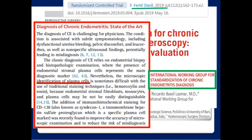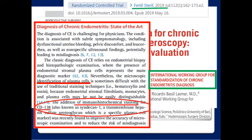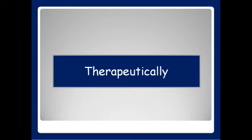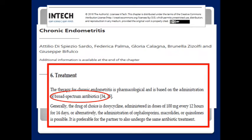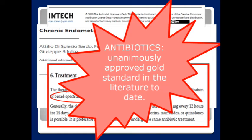Definitive diagnosis is provided by histopathology, mainly identification of plasma cells, facilitated by immunohistochemical staining for CD138. Therapeutically, the treatment of chronic endometritis is always and exclusively based on antibiotics — the unanimously approved gold standard in the literature to date.